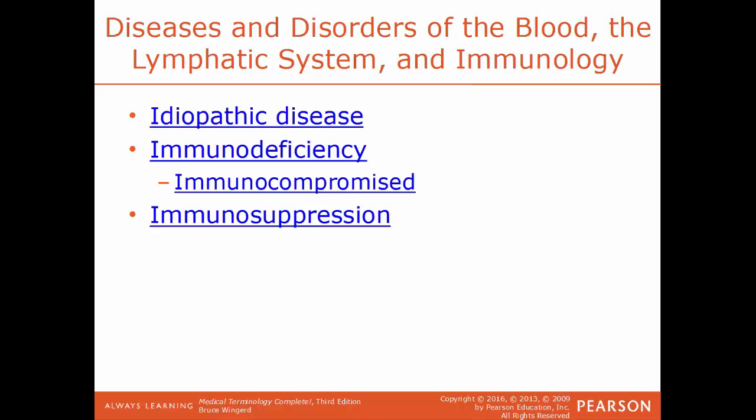Idiopathic disease is any disease of unknown cause — you can't identify it as viral, bacterial, or fungal, so it's classified as idiopathic. Immunodeficiency, also known as immunocompromised, is where the immune system becomes weakened — it can't function properly, meaning you get sicker faster and for longer. Immunosuppression is the partial or complete suppression of the immune system, often used in organ transplant situations. It can be induced by chemotherapy drugs or caused by diseases such as lymphomas or AIDS.